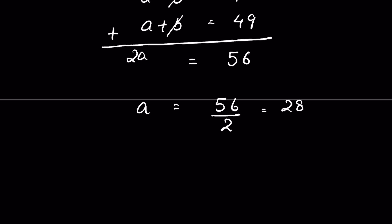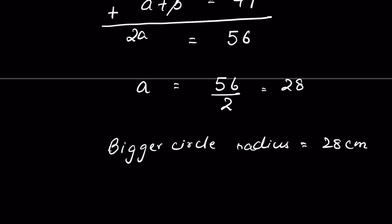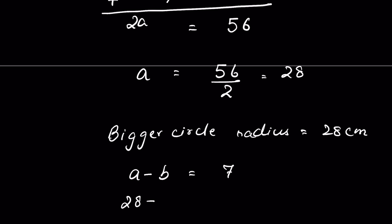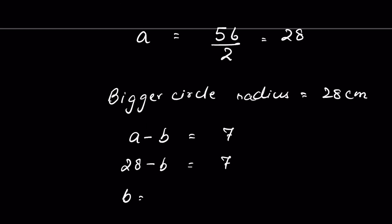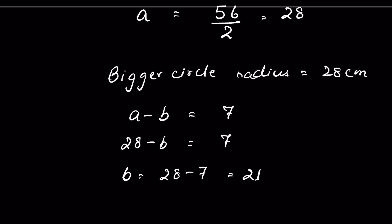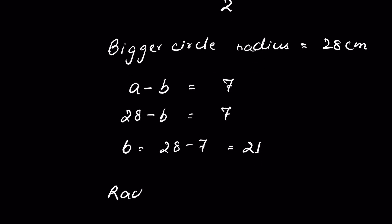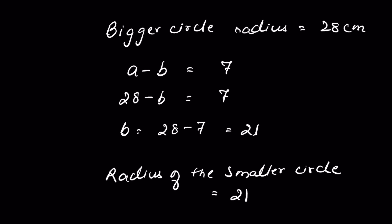So 28 is the radius of the bigger circle. We have to find the radius of the smaller circle. The difference is 7 centimeters, or from equation 1, a minus b is 7. A is 28 minus b is equal to 7, or b is equal to 28 minus 7, that is equal to 21. So radius of the smaller circle is equal to 21 centimeters.